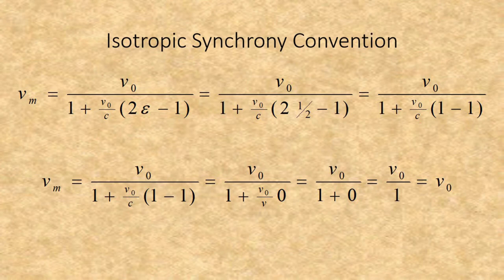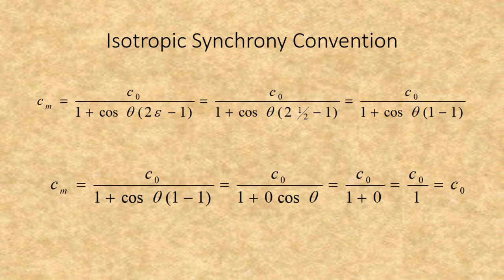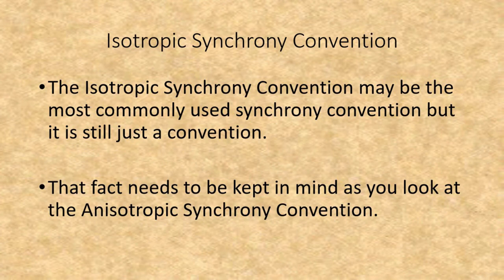In fact, we have actually observed an object apparently traveling towards us at a speed faster than the speed of light — its proper velocity would have been very close to the speed of light, however. Within the Isotropic Synchrony Convention, the measured velocity always equals the proper velocity, and the measured speed of light always equals the proper speed of light regardless of direction. Despite this convention being generally used in physics, astronomy, and cosmology, it needs to be remembered that it is just a convention. According to relativity, there is no absolute 'now' — what you consider now, even within a given reference frame, still depends upon how you synchronize clocks.